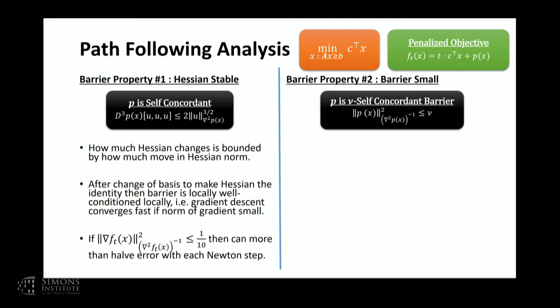The analysis boils down to two facts. First, we assumed the penalty function p is self-concordant: the Hessian's rate of change is bounded if we move by a bounded amount in the Hessian norm. If you do a change of basis to make the Hessian the identity, self-concordance says that if you move in a ball around a point, the Hessian stays looking like the identity. This means that if the norm of the gradient in the Hessian inverse norm is small — meaning the Newton step size is small in Hessian norm — then a few steps of Newton's method will rapidly converge to the central path point, with each step squaring your error.